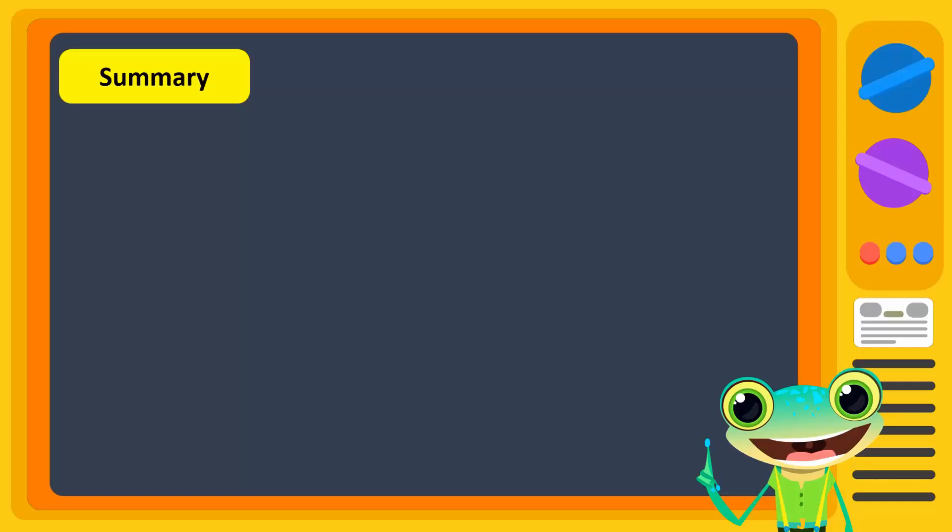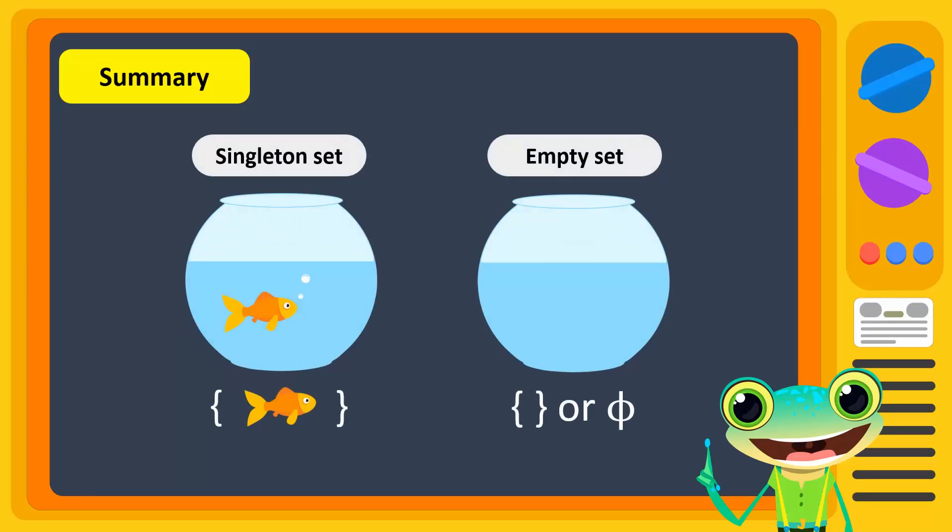In this video, we have learnt about singleton and empty sets. Singleton sets contain only one element and are expressed with that single element in braces. Empty sets contain no elements and are expressed with empty braces or phi.